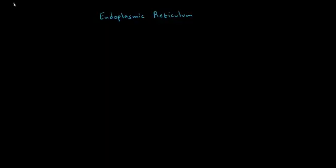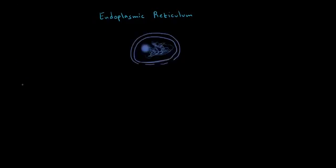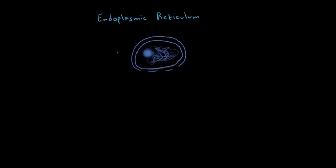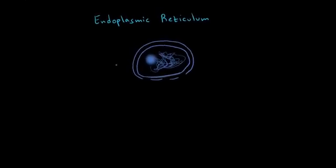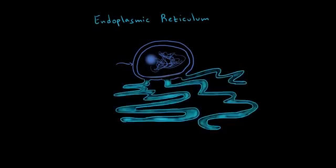The endoplasmic reticulum is an organelle in the cell that buds off of the nucleus. So let's say that this is the nucleus of a cell. It has a nuclear envelope, which is a double membrane structure. And this is the endoplasmic reticulum. Notice that the space in the nuclear envelope is contiguous with the lumen, or space, of the endoplasmic reticulum.